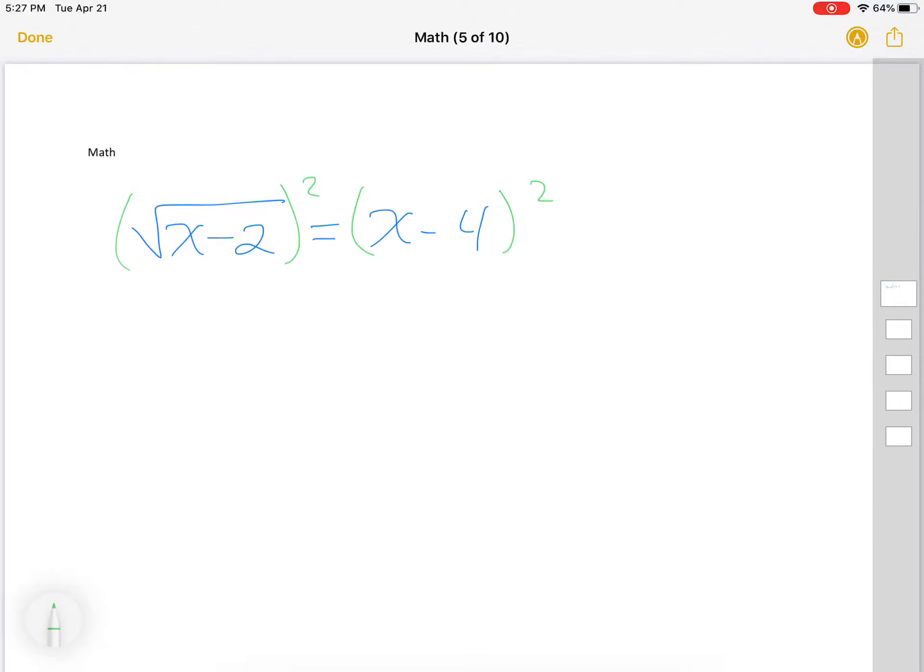first thing I'm going to have to do is I'm going to have to square both sides. So I square both sides. When I square the left side, it's just basically going to get rid of the radical.